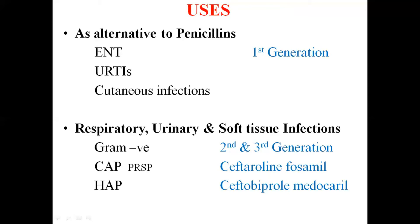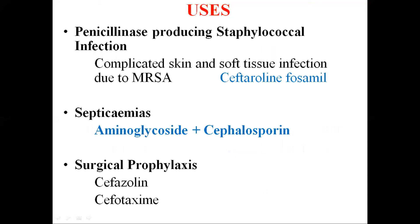For community-acquired pneumonia caused by penicillin-resistant Streptococcus pneumoniae, ceftaroline fosamil, which is a fifth generation cephalosporin, is preferred. For hospital-acquired pneumonia, ceftobiprole medocaril, also a fifth generation cephalosporin, can be given. For skin and soft tissue infections complicated by MRSA, the fifth generation cephalosporin ceftaroline fosamil is used.